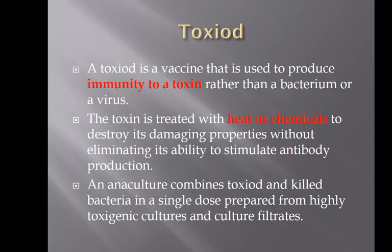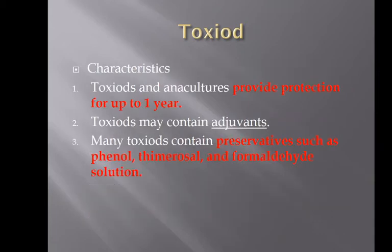A toxoid is a vaccine used to produce immunity to a toxin rather than a bacterium or a virus — immunity to what the product of the bacteria or virus is, not the actual disease-causing organism. The toxin collected is treated with heat or chemicals to destroy its damaging properties without eliminating its ability to stimulate antibody production. A bacterin-toxoid combines toxoid and killed bacteria in a single dose. Toxoids may contain adjuvants and preservatives such as phenylthimerosal and formaldehyde solution, and provide protection for up to a year.